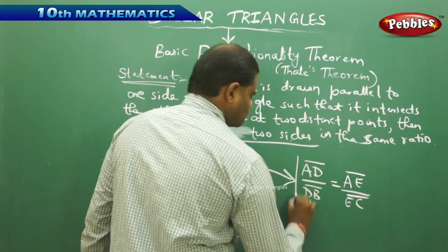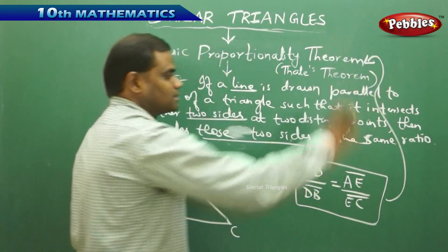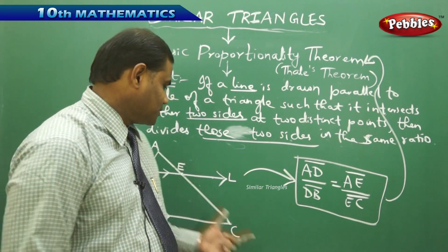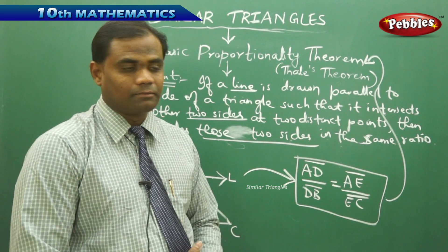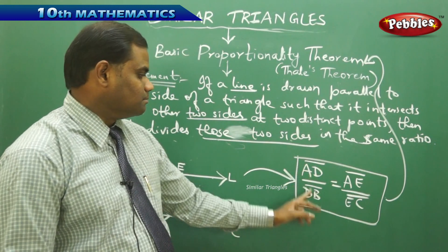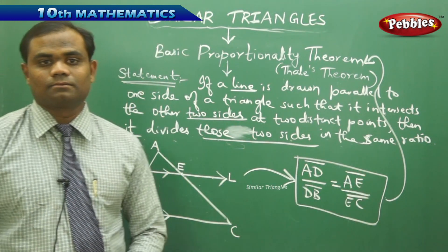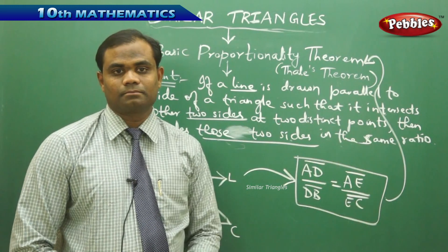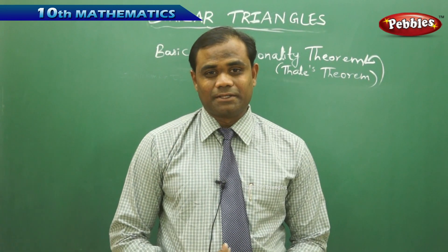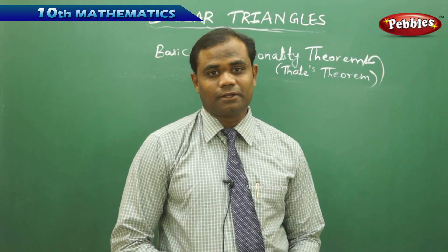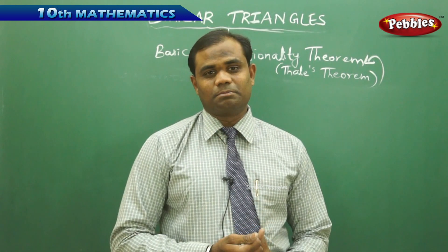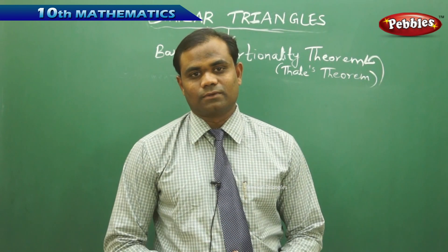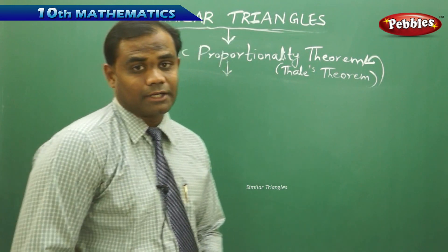We need to prove the Basic Proportionality Theorem, which states that the line divides the sides in the same ratio, that is, AD/DB = AE/EC. Now, to start with the proof of the theorem, it is standard practice to begin with the given conditions, then state what is required to be proved, then any constructions needed, and finally the actual proof.